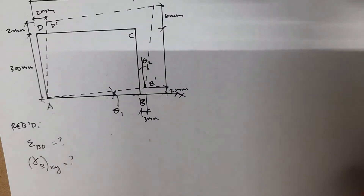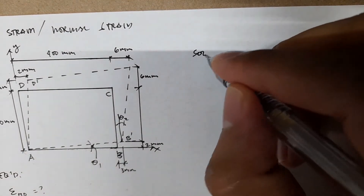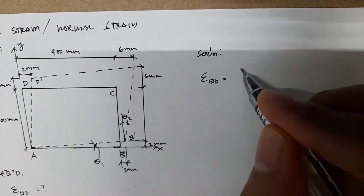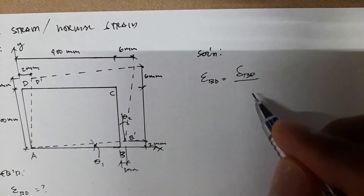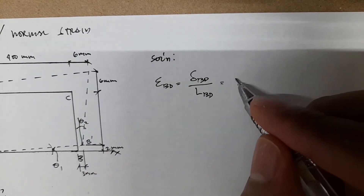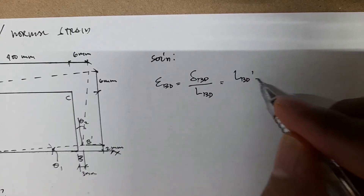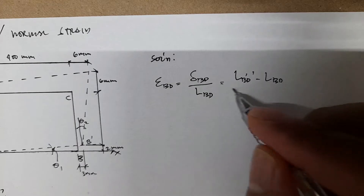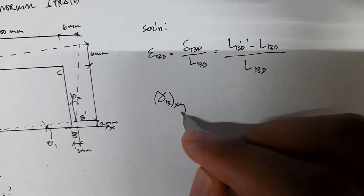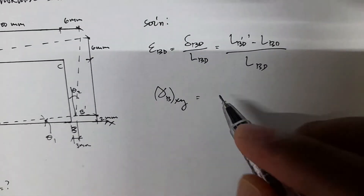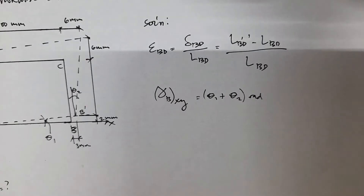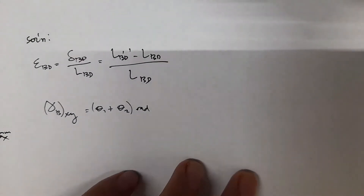Our working equations are: normal strain equals the deformation of BD divided by the original length BD, where deformation equals (LB'D' minus LBD) divided by LBD. For shear strain, it is the summation of the two angle changes — theta 1 plus theta 2 — both expressed in radians.